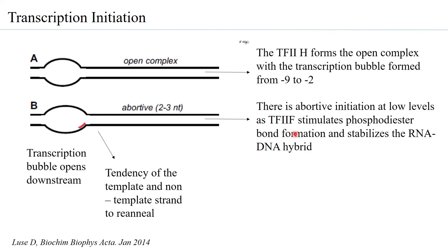TF2F will remain a component of RNA polymerase II as it moves towards initiation, along with TF2B, because TF2B is responsible for forming a kind of tunnel that allows the RNA polymerase to channelize the RNA through its exit channel.